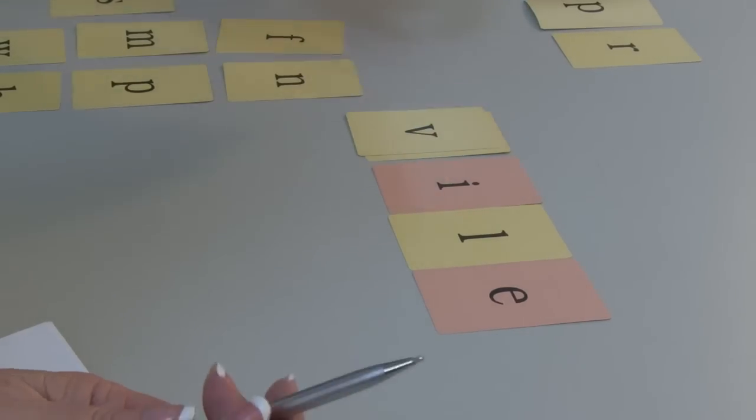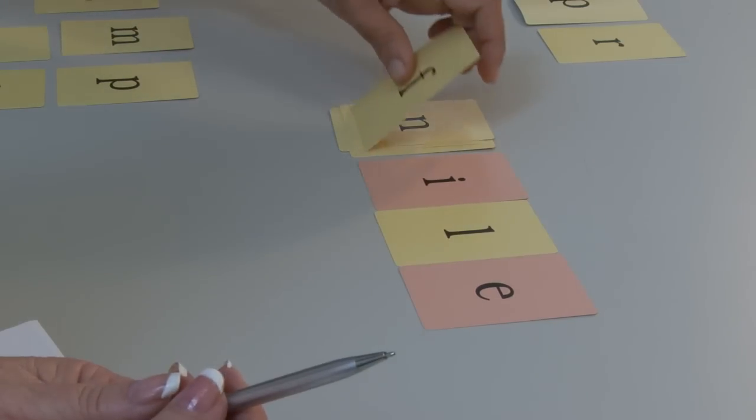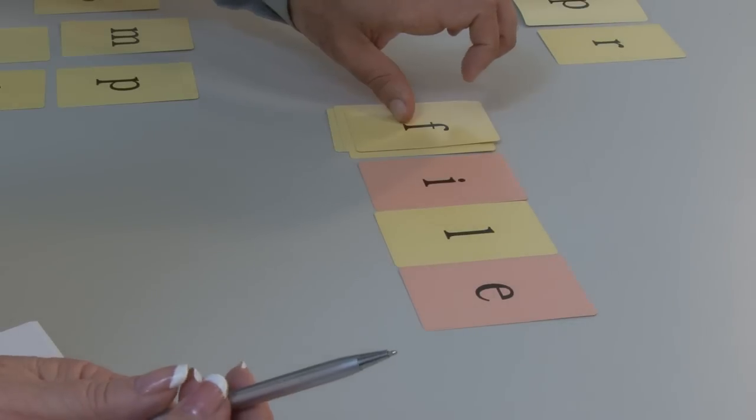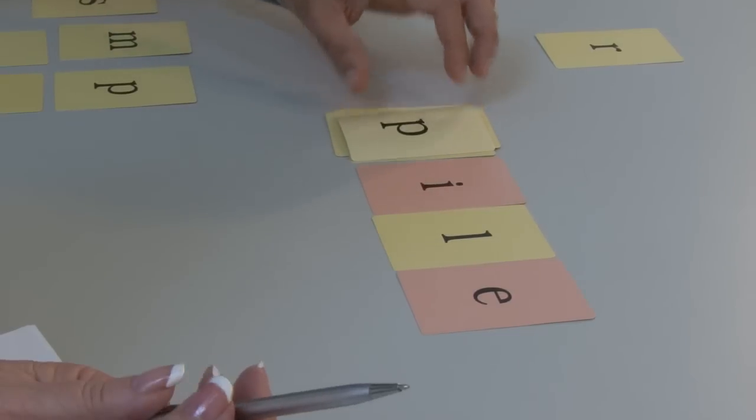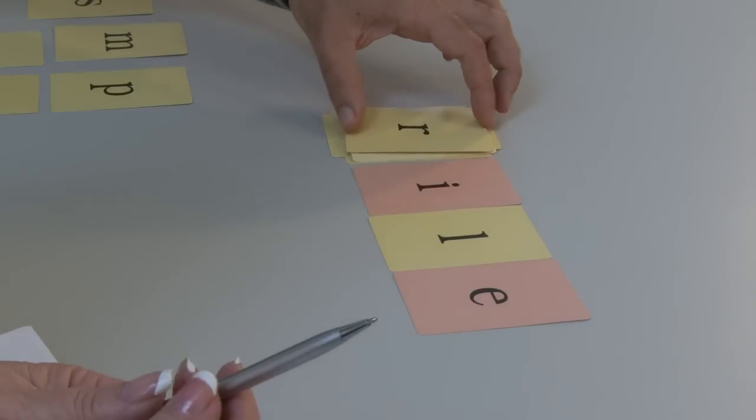I-L. Vile. I like that. Good one. Nile. The Nile. Okay. Good. Nile. Pile. Pile. Good. With a p? Rile. The r makes it rile. Good. Anything else?